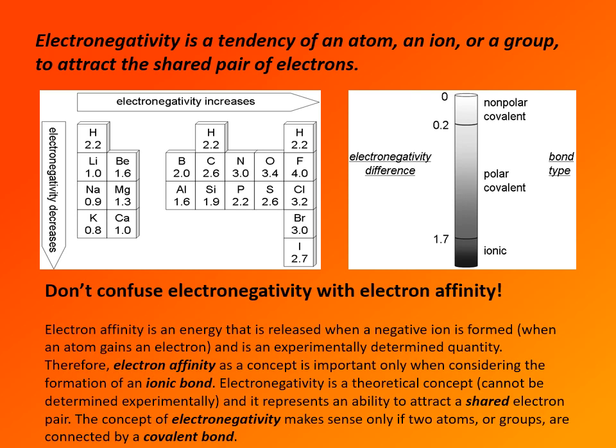Don't confuse electronegativity with electron affinity. Electron affinity is an energy that is released when negative ion is formed. So when atom gains an electron to form a negative ion. And this is a real physical process where atom gains an electron, and we can measure electron affinity. Electron affinity is a concept that is important only when we are considering ionic bond, because it's part of the process of formation of ionic bond.